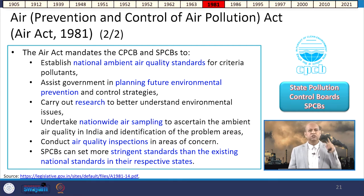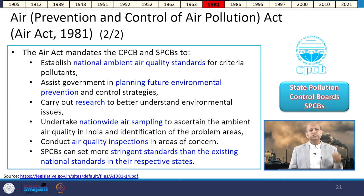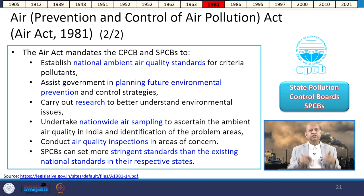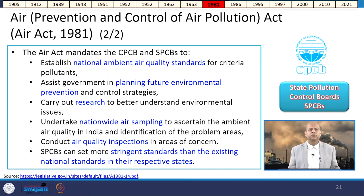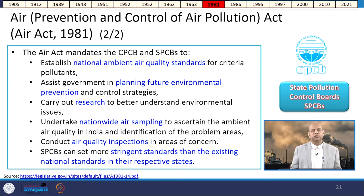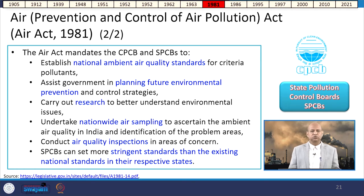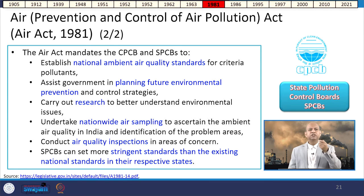This act gave authority to the Central Pollution Control Board and State Pollution Control Boards to apply ambient air quality standards across India, assist the government in planning future environmental prevention and control strategies, carry out research to understand environmental issues, and undertake nationwide air sampling to ascertain ambient air quality. State Pollution Control Boards were also allowed to set more stringent standards than those prescribed by the central government. The current network of air quality monitoring across India is rooted in this act.